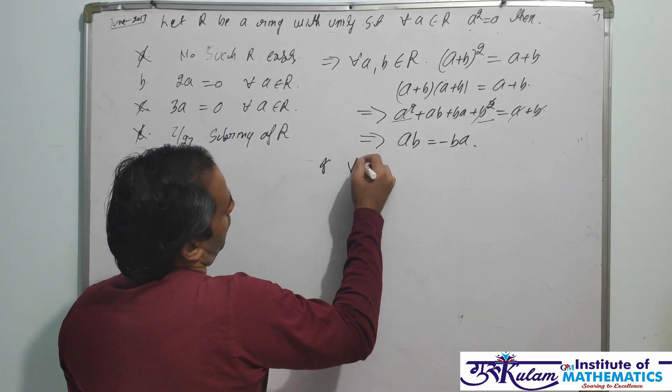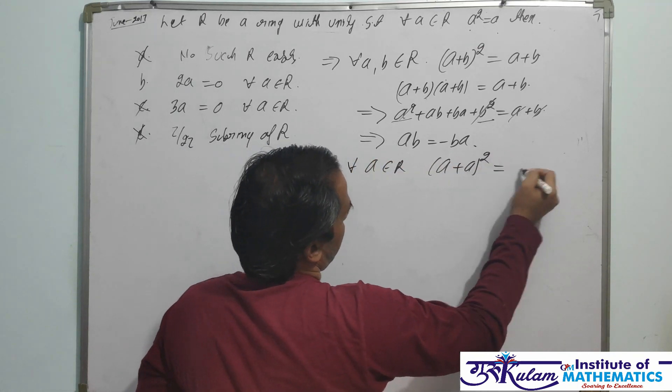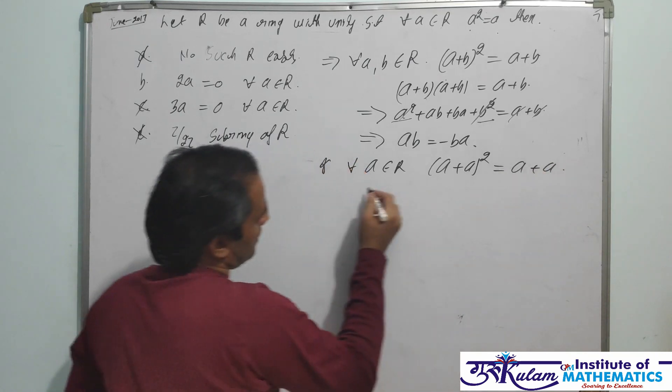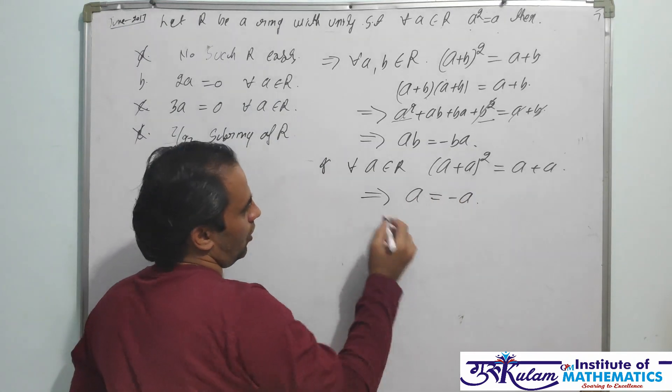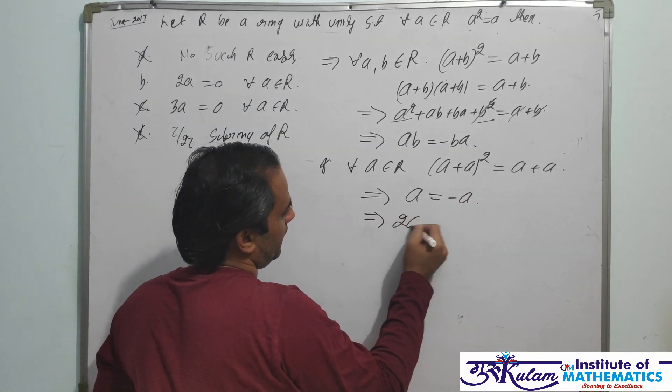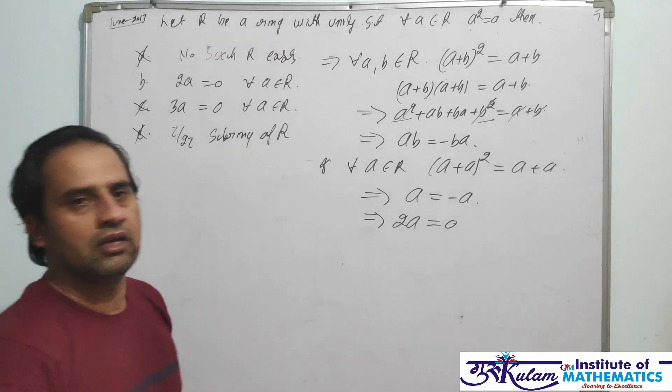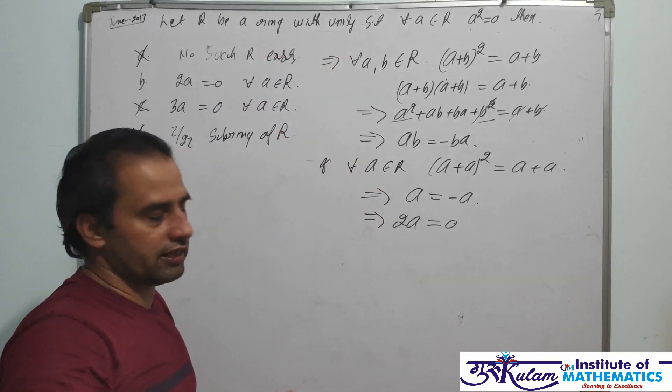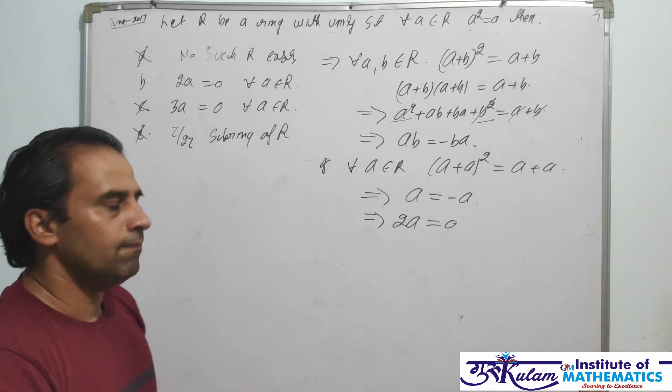For all A belongs to R, we can also write (A+A)² = A+A. This implies A = -A. Or this implies 2A = 0. That is, the characteristic of this ring is 2, provided the ring is with unity.